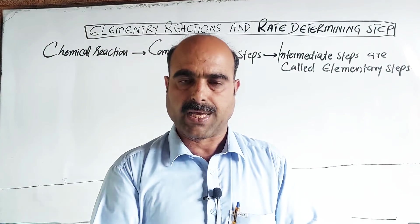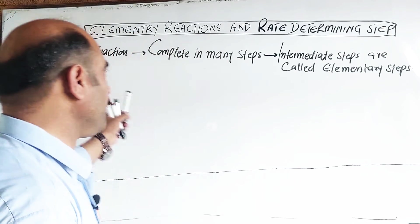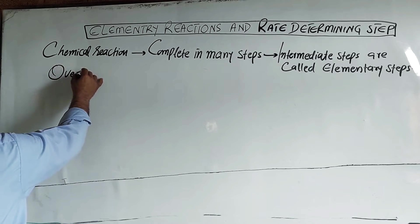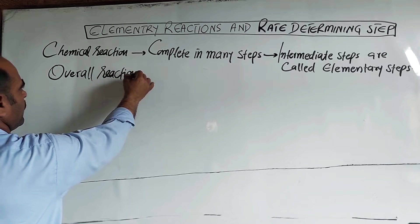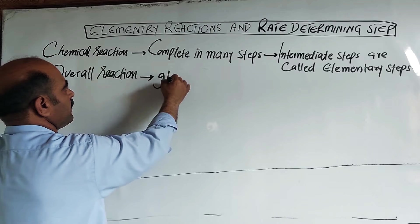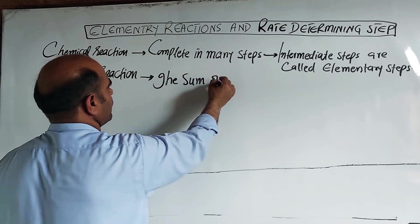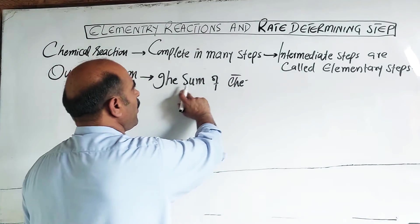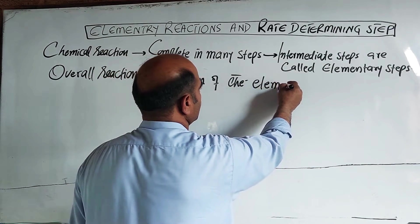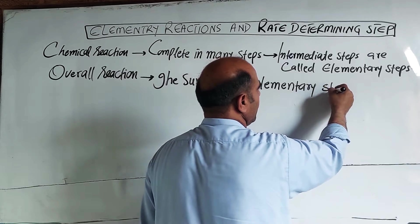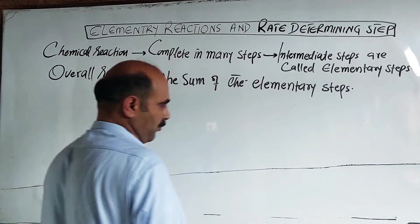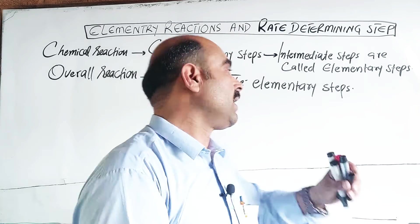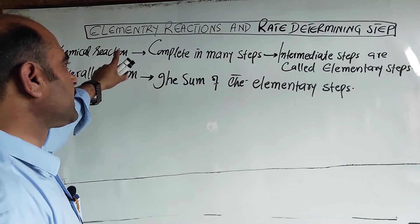The overall reaction is the sum of these elementary steps, or elementary reactions. If you add all the intermediate steps together, their combined sum gives you the overall reaction. Some steps are slow and some steps involve bond breaking.